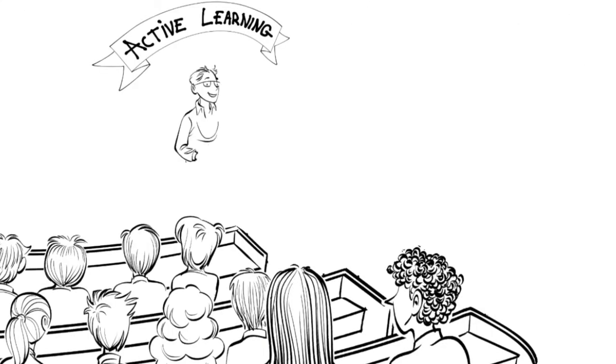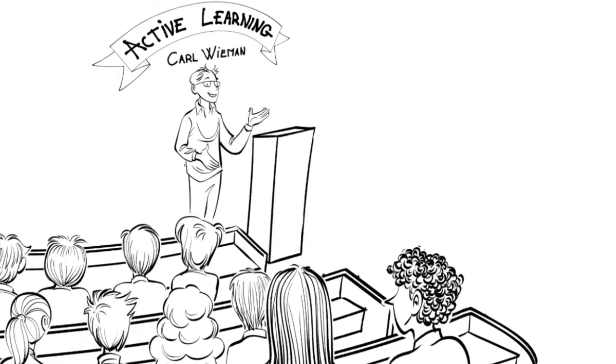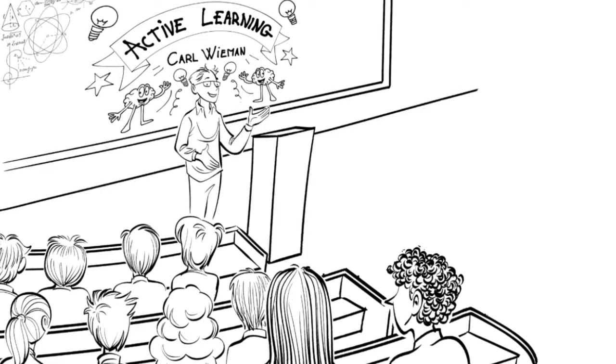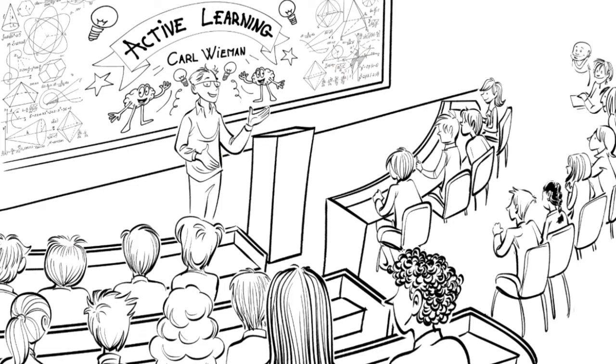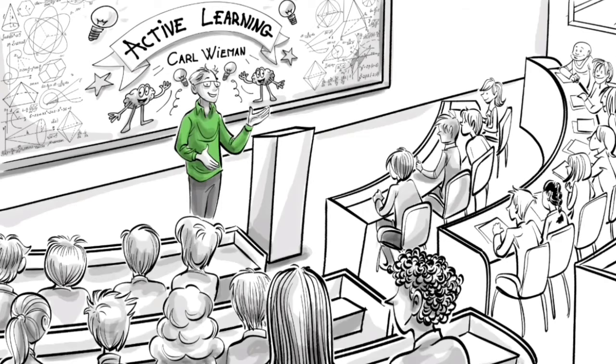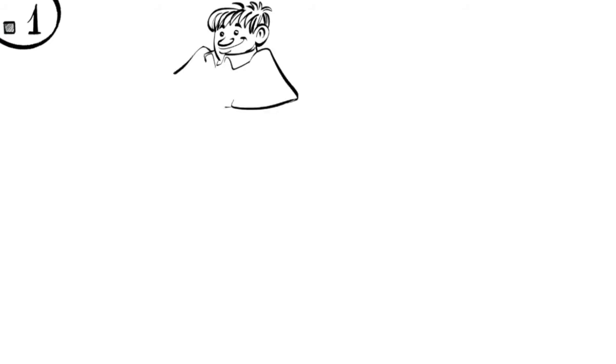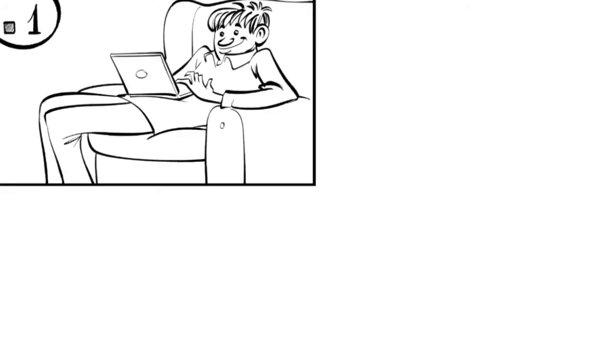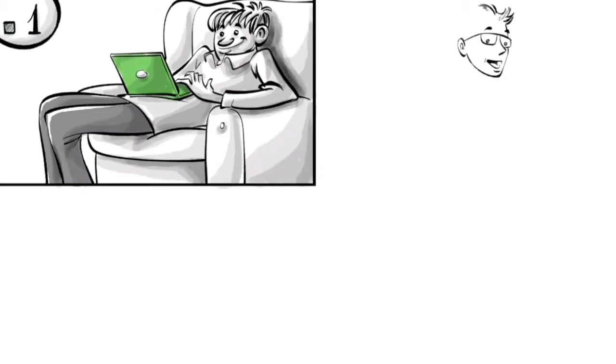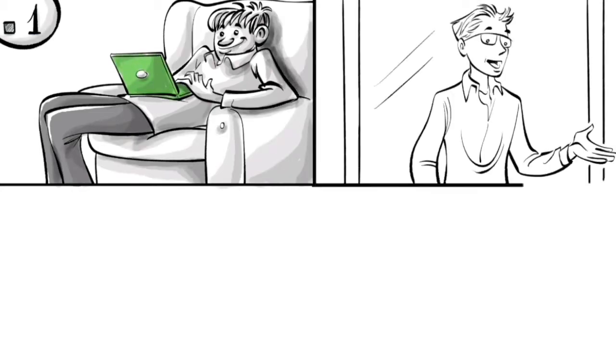To understand how active learning is applied in classrooms, let's look at the teachings of Professor Carl Wieman, a Nobel Prize-winning physicist and a leading proponent of the method. There are four steps to it. Step one: prior to class, the students read up on the fundamentals of a lesson so they get an idea of the terms and basic phenomena.